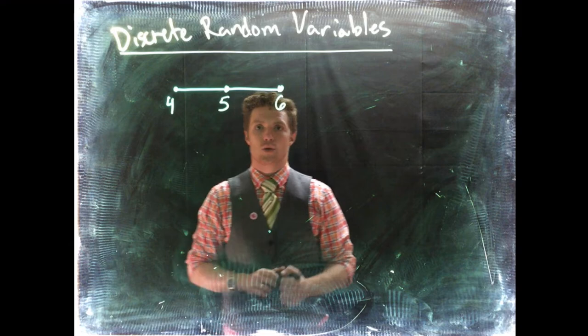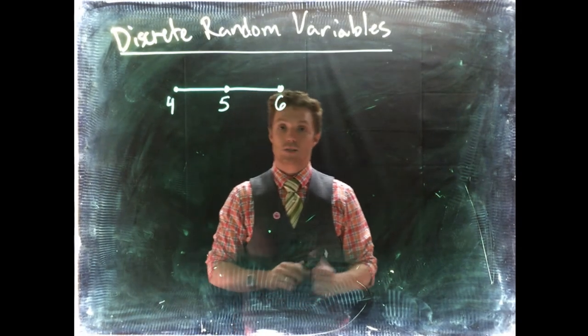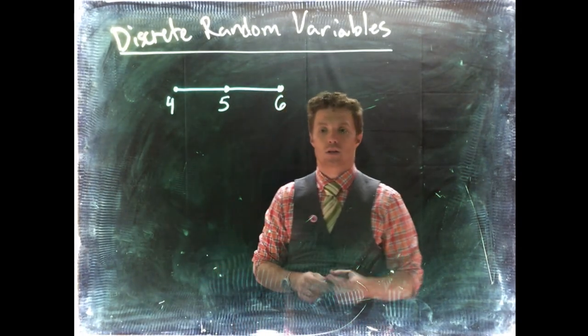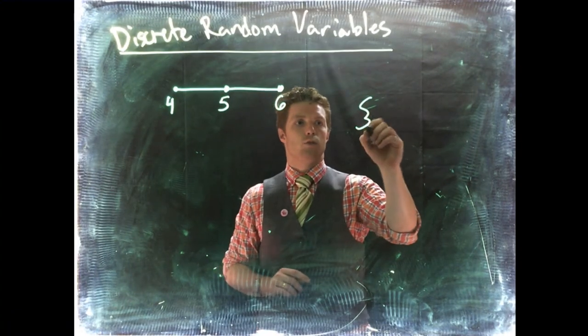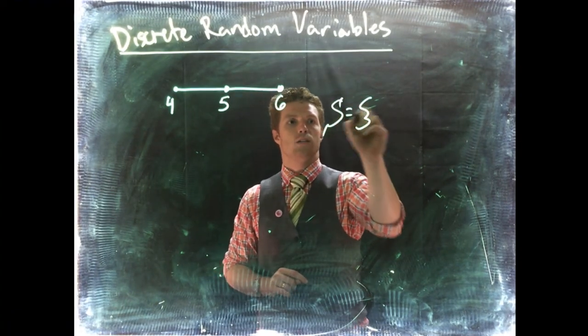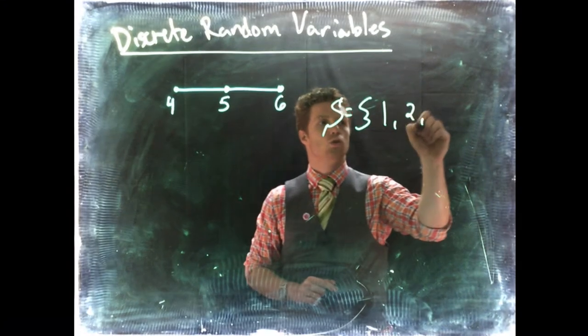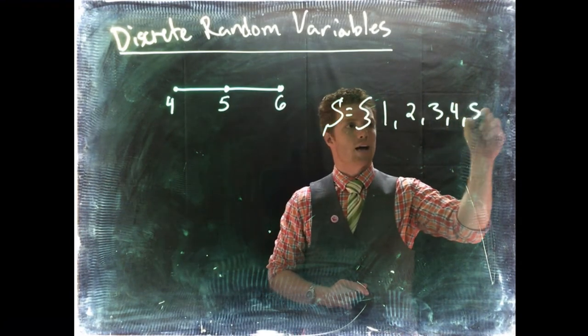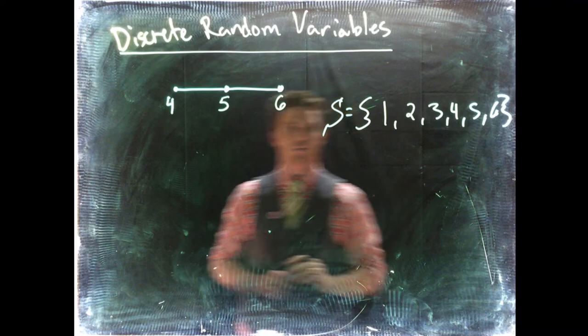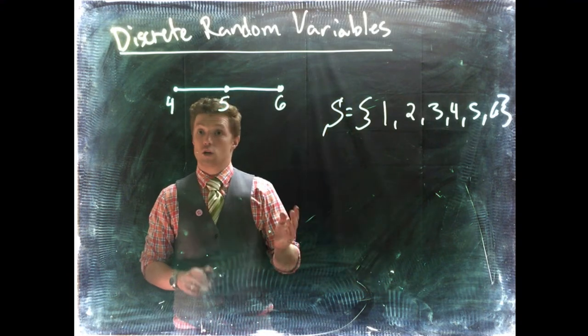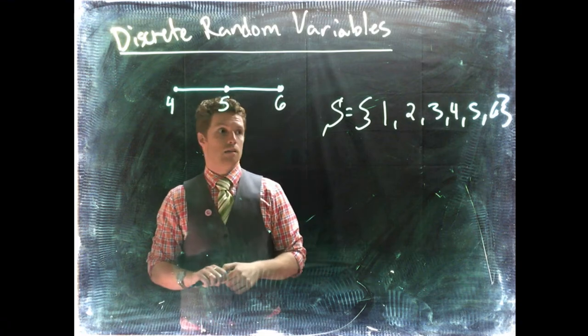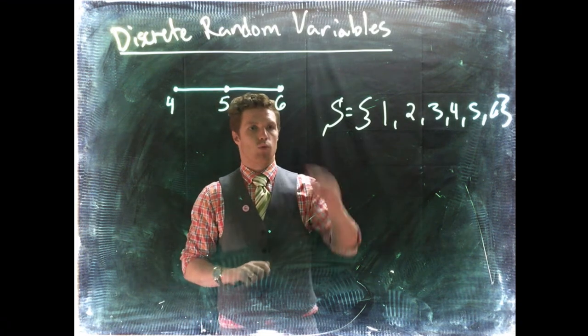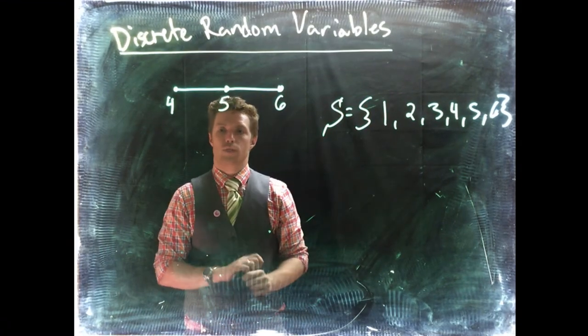Now we've dealt with some discrete random data before, specifically our dice roll. We had our sample space. We'll do S equals our sample space of one, two, three, four, five, and six. Alright, so we couldn't roll like a two and a half. We couldn't roll a 4.2. For rolling a single dice, we can only roll one through six.